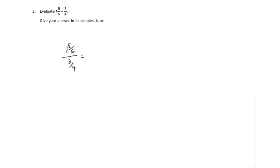First off, this 1 and 5 sixths — that's 6 sixths, and 1 is 6 sixths plus another 5 sixths, which would be 11 sixths. Some of you may have learnt to go 6 times 1, then 6 plus 5 is 11. Either way, you'll get 11 sixths over 3 quarters.